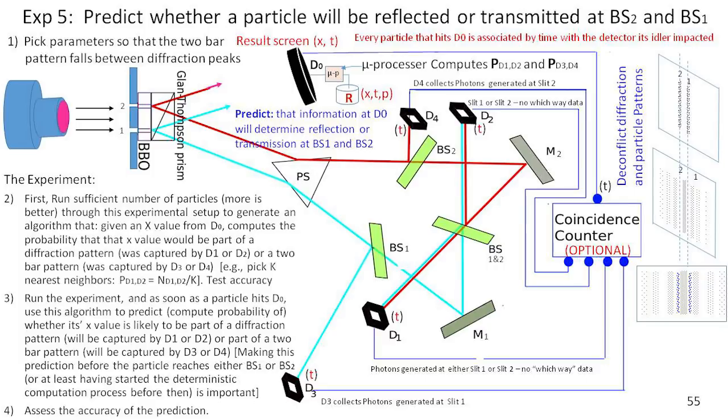We will be able to associate a particle in D0 with its partner particle that's in D3, D4, D2, or D1. Okay, so that's the setup.